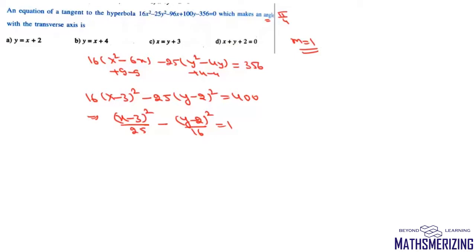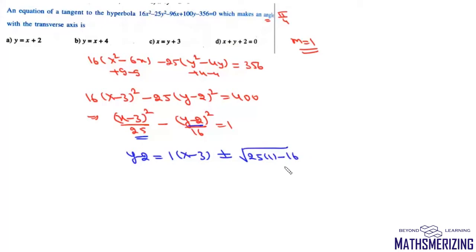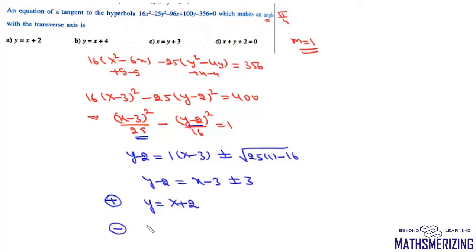We write the equation of the tangent as y - 2 = m(x - 3) ± √(a²m² - b²), where m=1, a²=25, and b²=16. This simplifies to y - 2 = (x-3) ± 3. Taking the plus sign gives y = x + 2, and the minus sign gives y = x - 4. The only option present is y = x + 2.